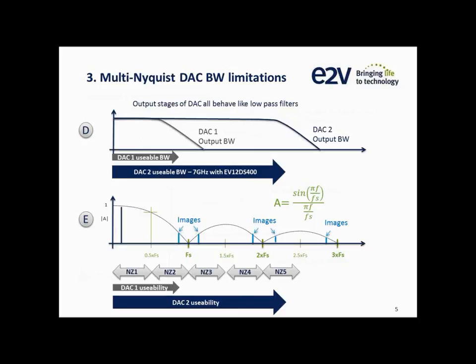That's very important to understand. Chart E at the bottom represents output power versus output frequency — the sinc X, or sinusX-over-X, phenomenon. When working with DACs only in the first Nyquist zone, we don't worry much about sinc X since it only reduces output power toward the end of zone one. But if you work in Nyquist zones two, three, or four, you really have to understand this sinc X phenomenon because it significantly affects the output power at the DAC output.